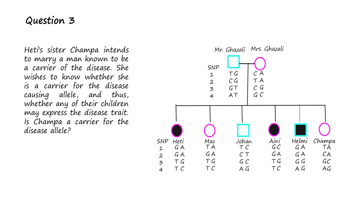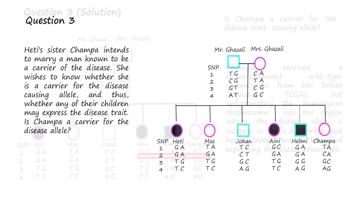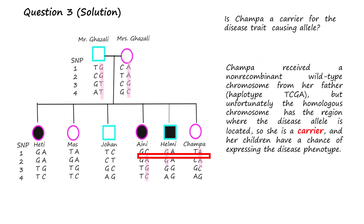Question 3: Hattie's sister Champa intends to marry a man known to be a disease carrier. She wishes to know whether she is a carrier for the disease-causing allele, and thus whether any of their children may express the disease trait. Is Champa a carrier? The answer depends on the chromosomes Champa inherited with respect to the location of SNPs 1 and 2, as this is the location of the disease-causing allele. Champa received a non-recombinant wild-type chromosome from her father, haplotype TCGA. Unfortunately, the homologous chromosome she inherited from her mother has the region where the disease-causing allele is located, so she is a carrier.